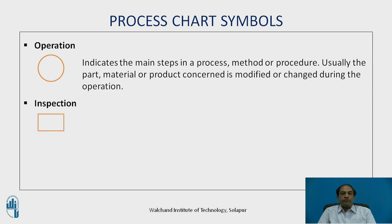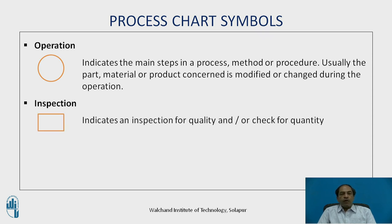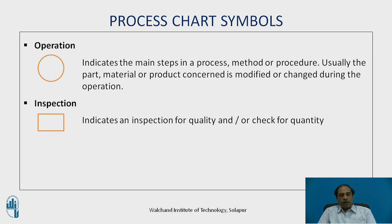The next symbol is inspection, indicated by a square. It is an inspection for quality or a check for quantity. Quality check can be in terms of a variable measurement or an attribute measurement — such as yes/no, present/absent, okay/not okay, accepted/not accepted, go/no-go — or it can be any value by a measuring instrument, simply checking whether a particular operation is accepted or not.